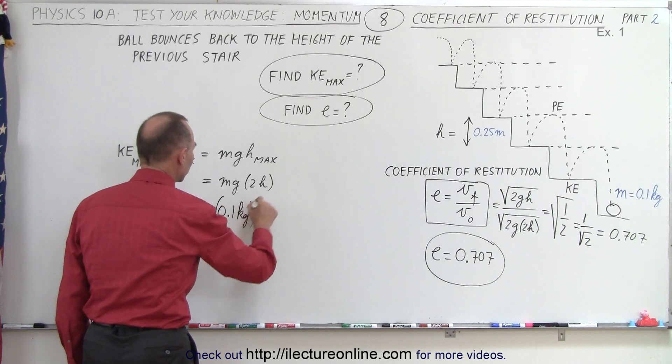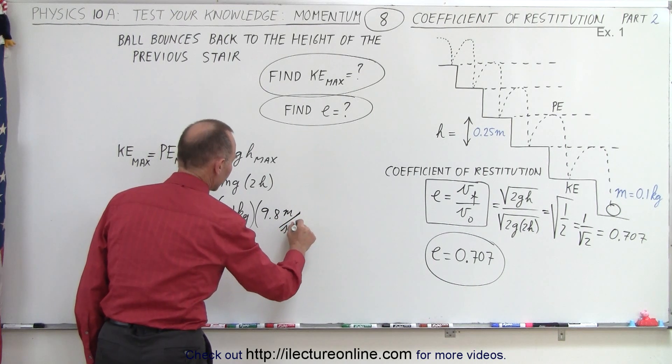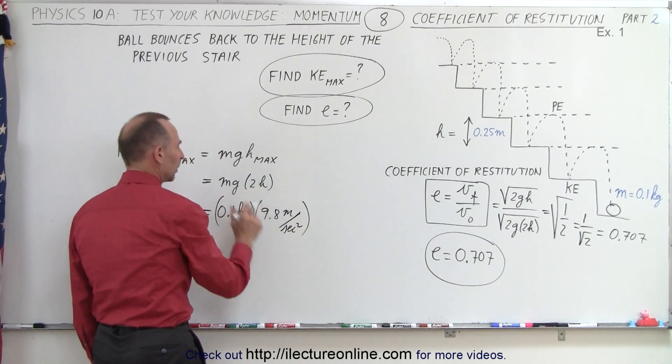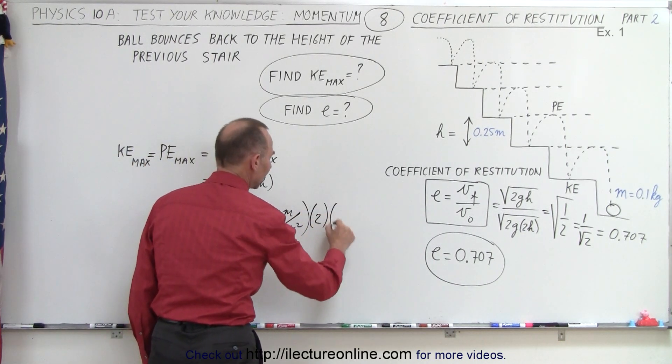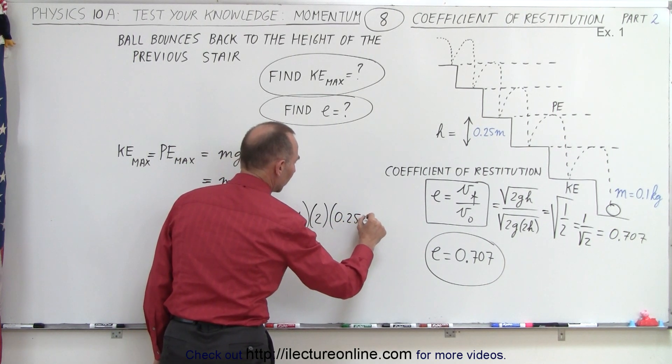And then we have to multiply that times g, which is, in this case, 9.8 meters per second squared. And then we multiply that times the height, so we do 2 times the height of each stair, which would be 0.25 meters.